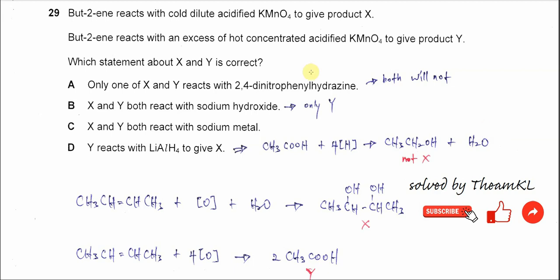Question 29. But-2-ene reacts with cold dilute acidified KMnO4 to give product X. And but-2-ene reacts with excess of hot concentrated acidified KMnO4 to give product Y.